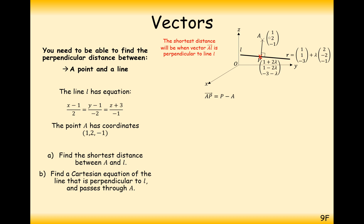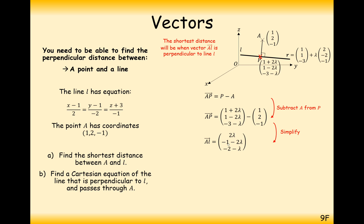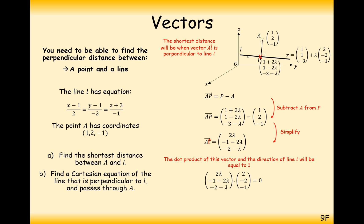What we're looking to find now is the direction vector of the line from A to P. We do that by doing coordinate P take away coordinate A. That gives us 2λ, minus 1 minus 2λ minus 2, and minus λ — so that's the direction vector from A to P. Now we use the fact that this direction vector will be perpendicular to the line. Since the two lines are perpendicular, from the dot product we know they will equal zero when dotted together.